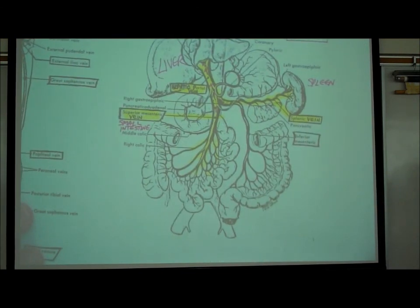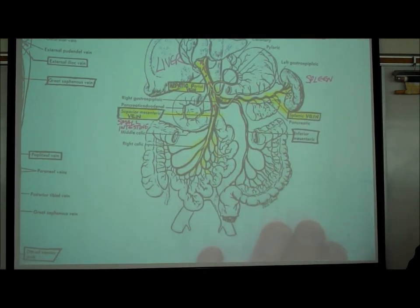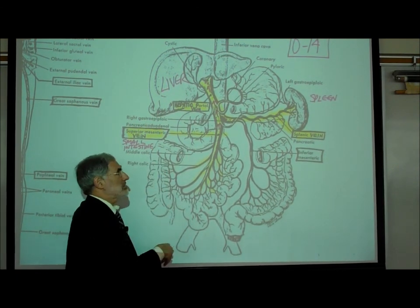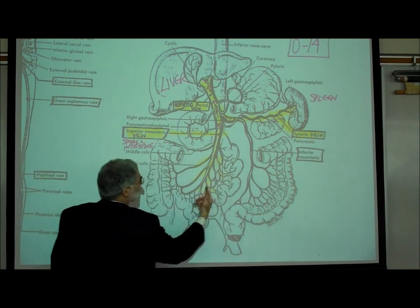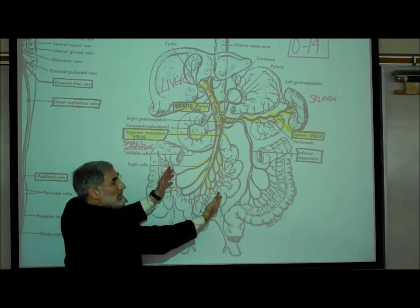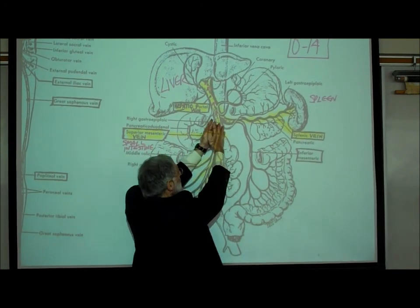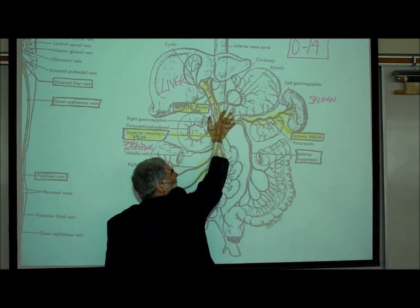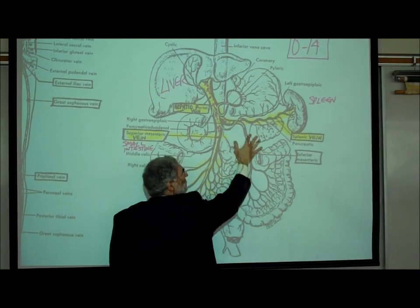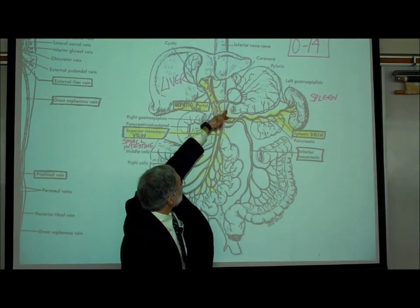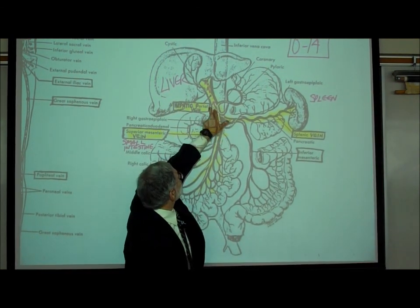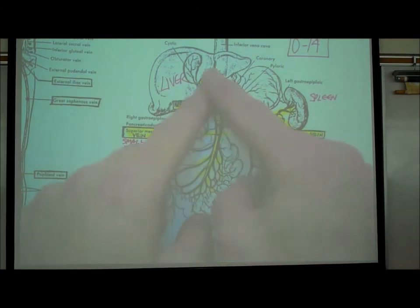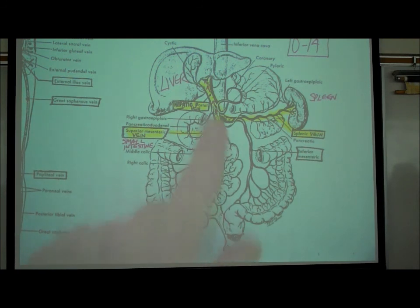Page 014 shows three key veins to know: the superior mesenteric vein (bringing blood and absorbed nutrients from the small intestine), the splenic vein (bringing blood from the rest of the digestive tract including the large intestine), and they join together — forming like an upside-down Y — to form the hepatic portal vein that takes blood right to the liver.